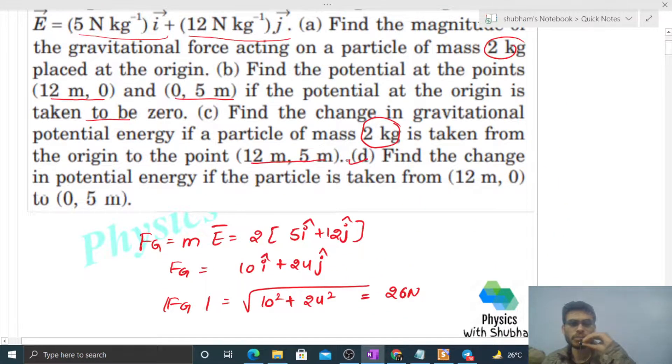Part (d): Find the change in potential energy if the particle is taken from (12,0) to (0,5). This is mass times change in potential. Mass is 2, and we need V(0,5) - V(12,0). We calculated both are -60, so the change in potential is zero. Therefore, change in potential energy is also zero.